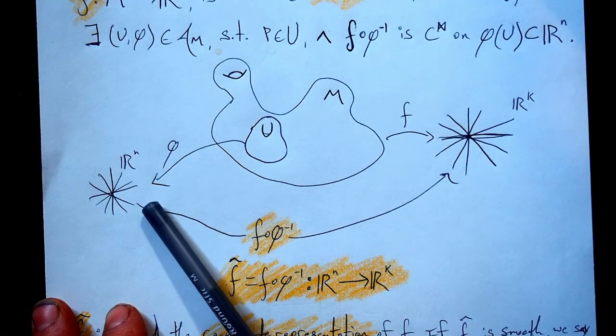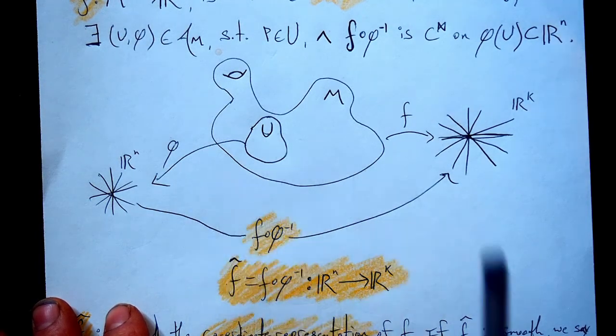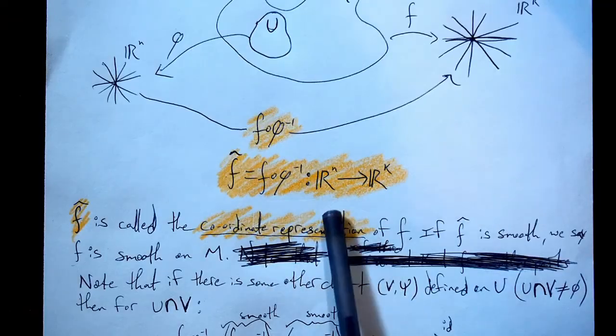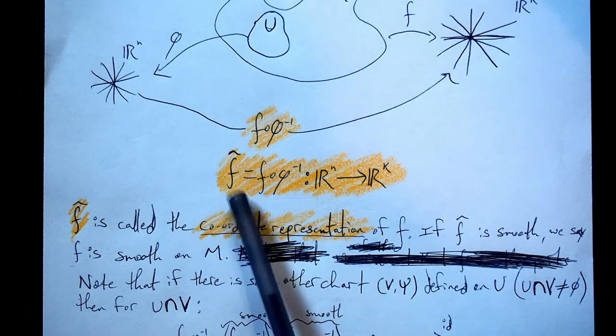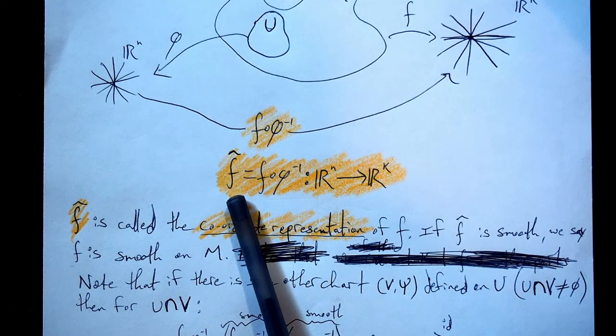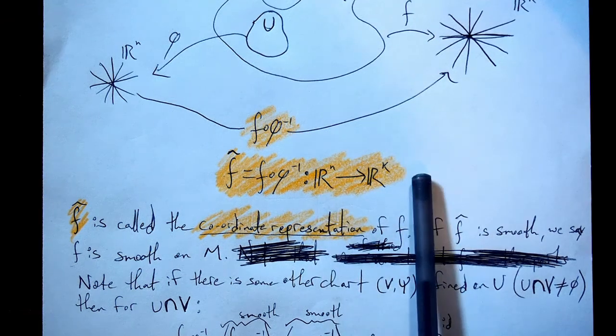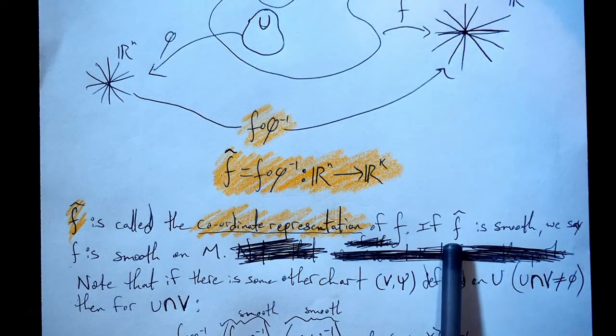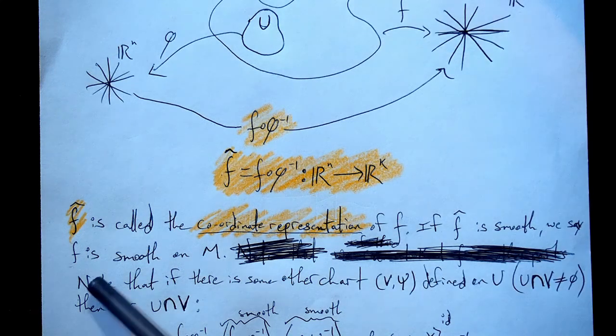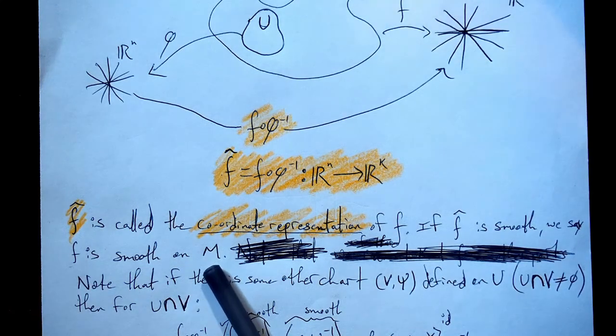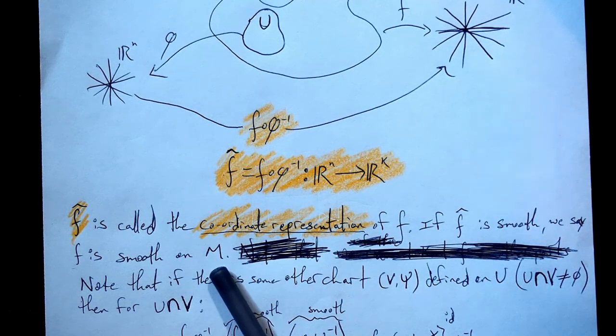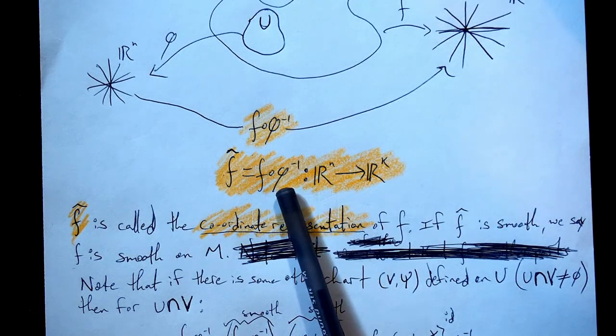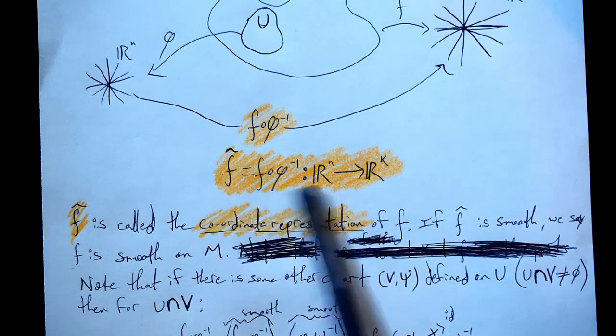We've done multivariable calculus before, hopefully, so we know how maps work from ℝ^n to ℝ^k. Looking at this guy right here, we call this guy the coordinate representation of f. This is just what I said, domain, range. So f̂ is called the coordinate representation of f. If f̂ is smooth, we say that f is smooth on M. And this is going to have to be true for all points in M. f is going to have to precompose with all the different coordinate maps. But it's the same idea as what we're doing here.